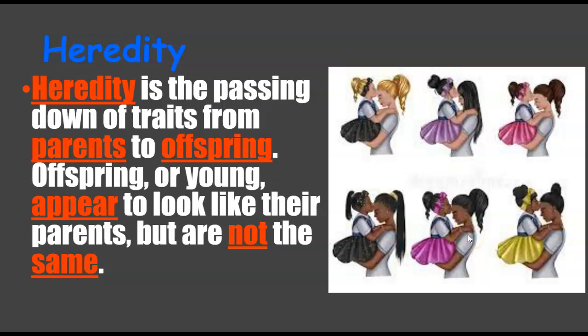Heredity is the passing down of traits from parents to offspring, whether it be people, plants, or animals. Offspring appear to look like parents but are not exactly the same. For example, mothers and daughters may look similar, and even pea plants can look identical but aren't.